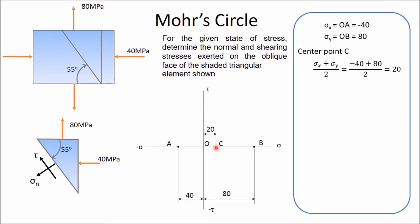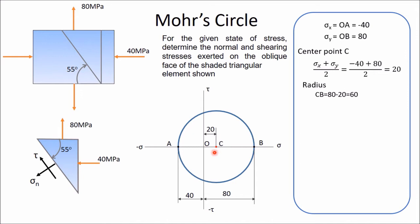Mark center point C, where OC equals 20. After getting point C, you can draw the Mohr circle, because in these two faces no shear stresses are applied. Therefore, directly draw one Mohr circle with center C and CB as radius. This is your required Mohr circle. The radius equals CB, which is OB minus OC: 80 minus 20 equals 60. So the radius of the Mohr circle is 60.